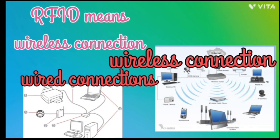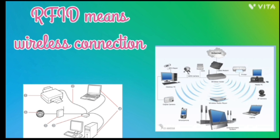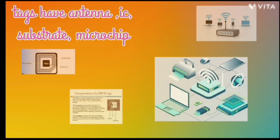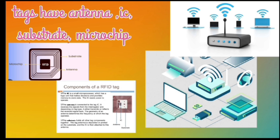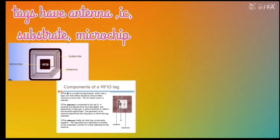RFID is a tag that uses electromagnetic fields to automatically identify and track tags. These tags contain electronically stored information, which can be read by a nearby RFID reader.